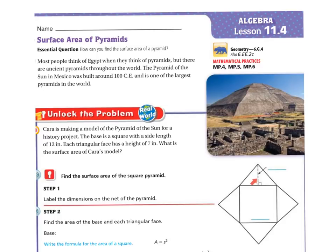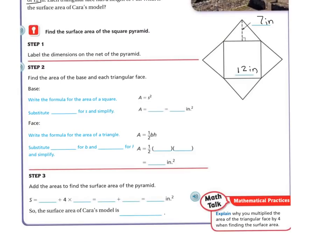So if we're looking over here, we're going to label this. She said that the height is 7, so I'm going to put 7. And she said that my side length was 12, so I'm going to put 12 inches. Step 1 was to label the dimensions, which we did.